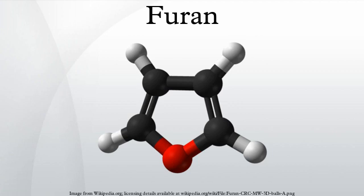The name furan comes from the Latin 'furfur', which means bran. The first furan derivative to be described was 2-furoic acid, by Carl Wilhelm Scheele in 1780. Another important derivative, furfural, was reported by Johann Wolfgang Döbereiner in 1831 and characterized nine years later by John Stenhouse. Furan itself was first prepared by Heinrich Limprecht in 1870, although he called it tetrophenol.